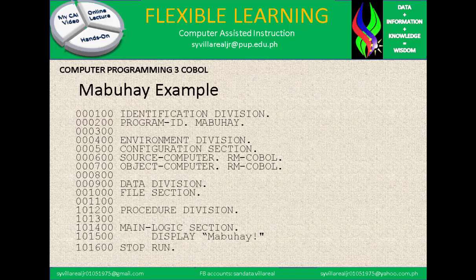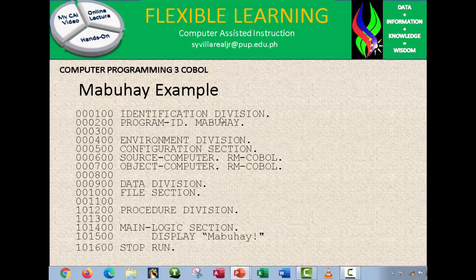Here is a sample program — the Mabuhay example. This is the numerical division area and this is the non-numerical division area, segregated by one column. Right here is the identification division, as mentioned — that is the name of the program, the name of the file, and the programmer's name — all indicated in the identification division. Then we have the environment division.